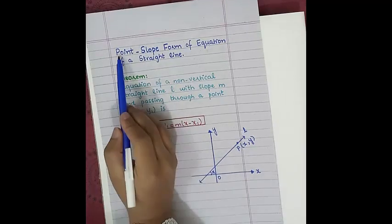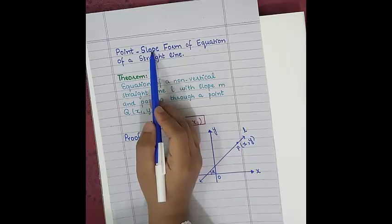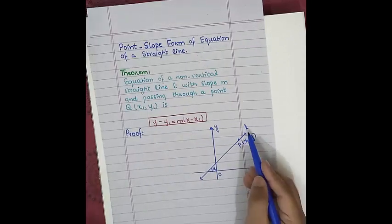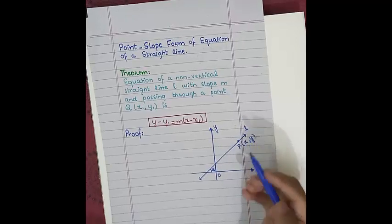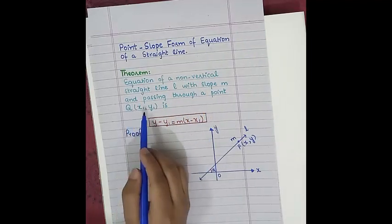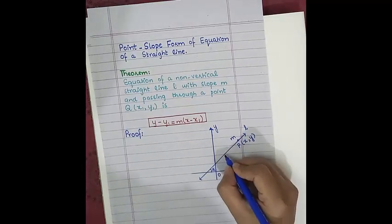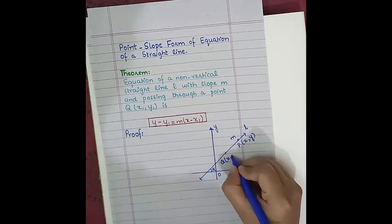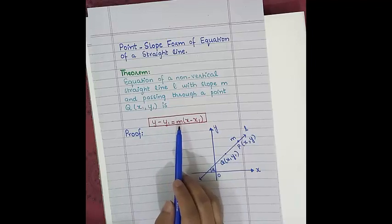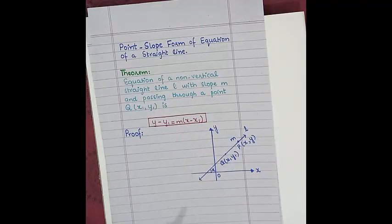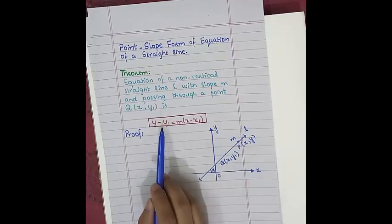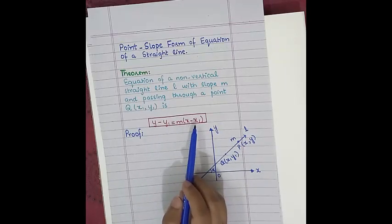Now we have two things: one is a point, the other one is slope. The theorem says the equation of a non-vertical straight line, labeled as L with slope M, passing through a point Q(X1, Y1), is Y minus Y1 equals M times X minus X1. So if we have one point and one slope given, the formula to find an equation is Y - Y1 = M(X - X1).